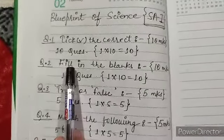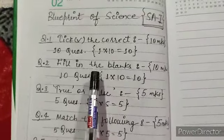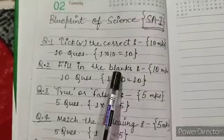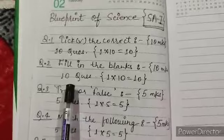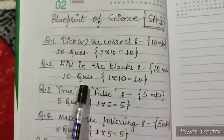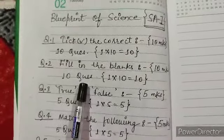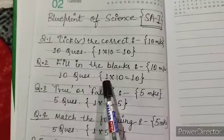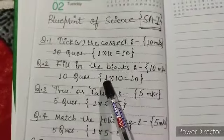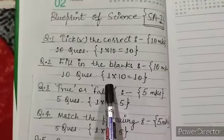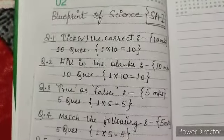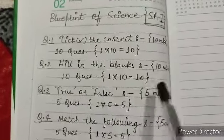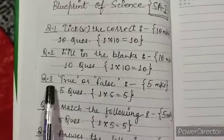Question number 2 is Fill in the Blanks. There will be 10 questions, each carrying 1 mark, so 1 into 10 means 10 marks total.